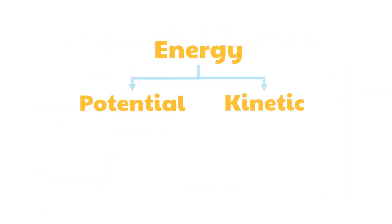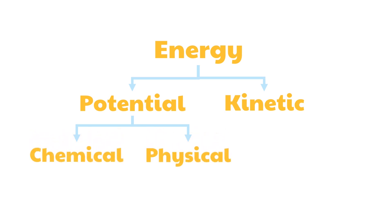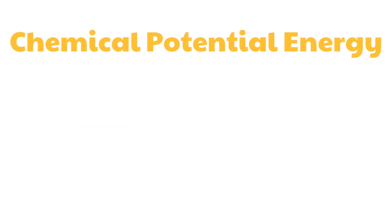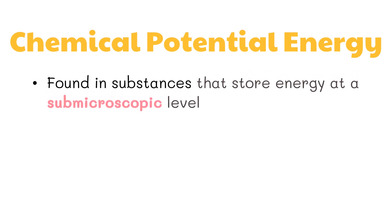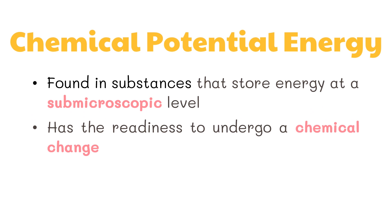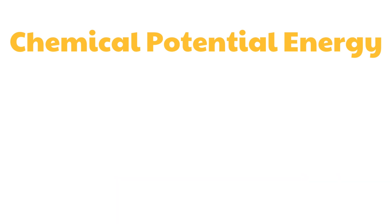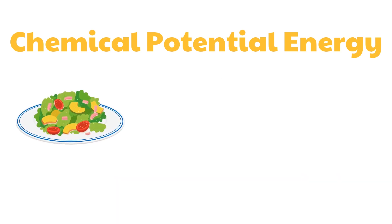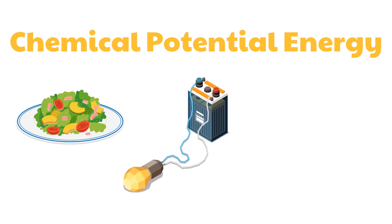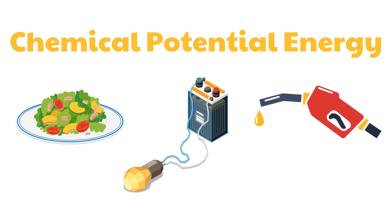There are two types of potential energy: chemical potential energy and physical potential energy. Chemical potential energy is found in substances that store energy at a submicroscopic level. It has the readiness to undergo a chemical change and the potential to alter electric charges in molecules. Examples are the food that we eat, the batteries we use for our gadgets, and the gasoline that runs cars.